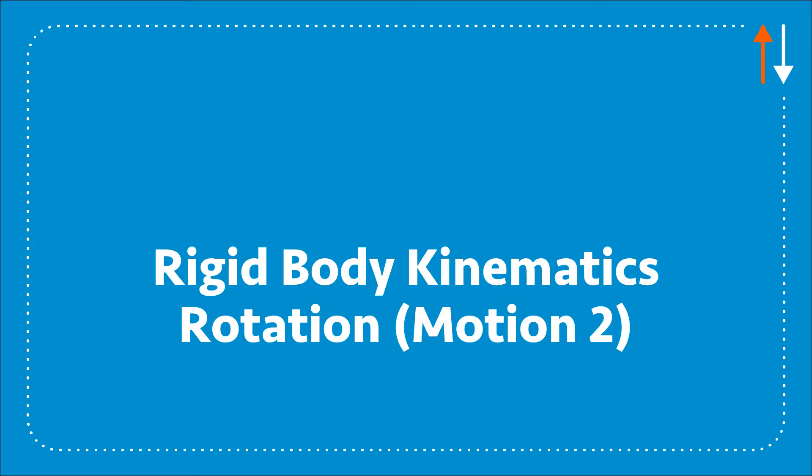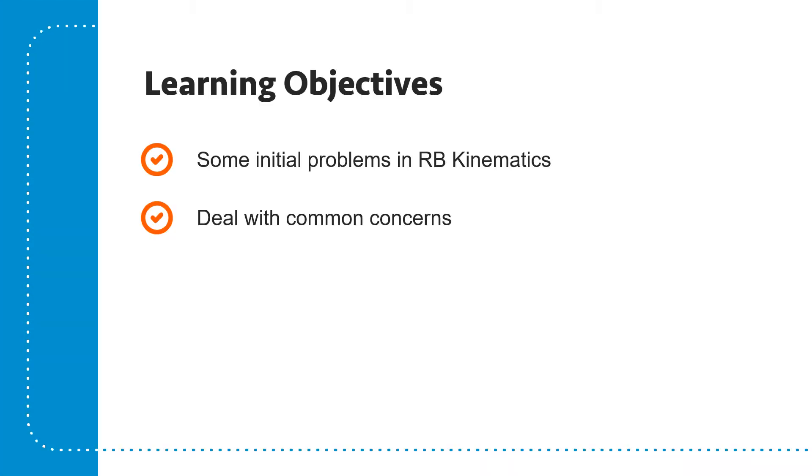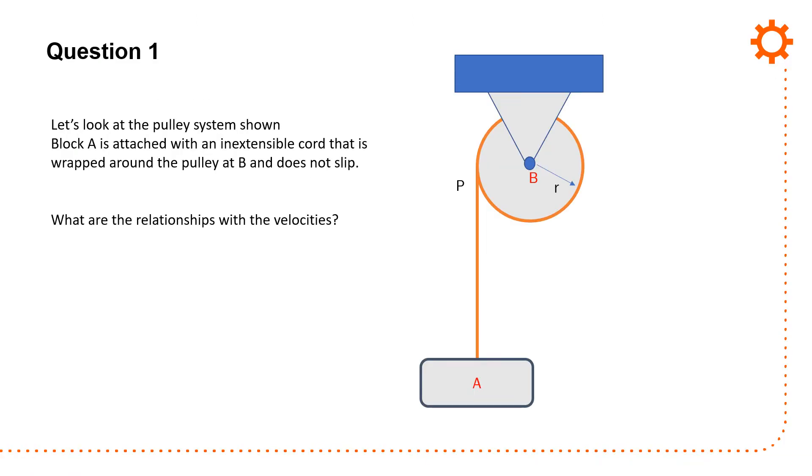I thought it'd be useful to do a presentation on rigid body kinematics focused on rotation, which is translational motion number two that was defined in the three types of motion you see with rigid bodies. These are not very complex problems. They are intended more to highlight what are the common assumptions that we use and to make sure that you're aware of how to deal with these common issues.